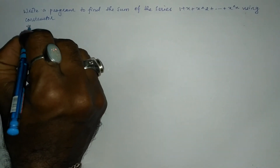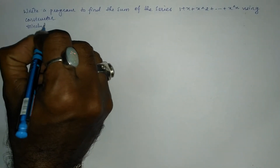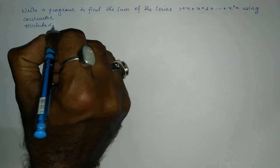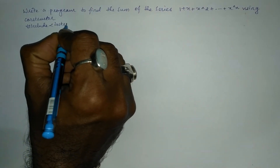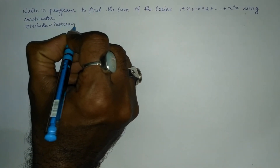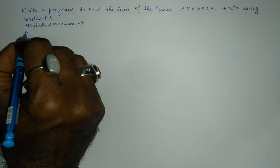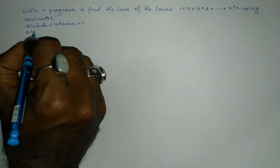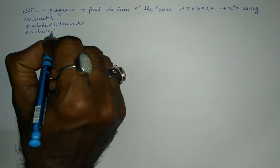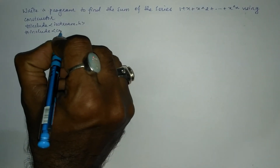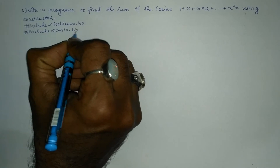Let us begin with the preprocessor directives: hash include iostream.h. The next preprocessor directive is hash include conio.h.